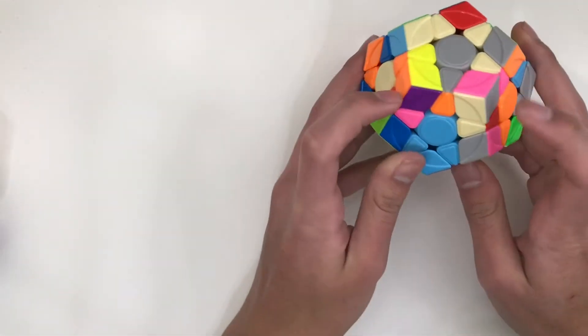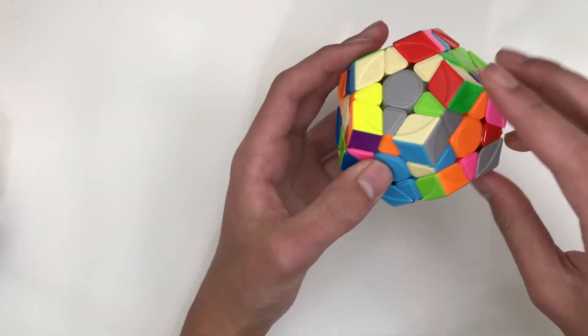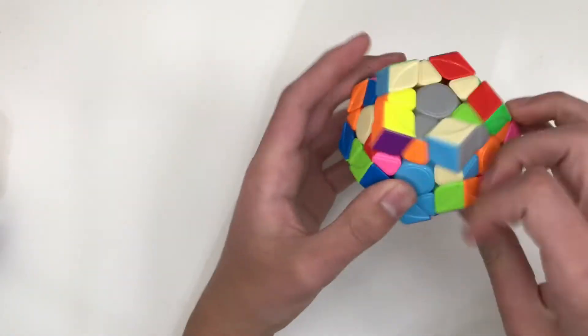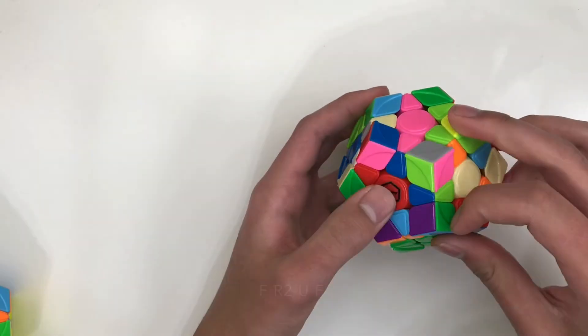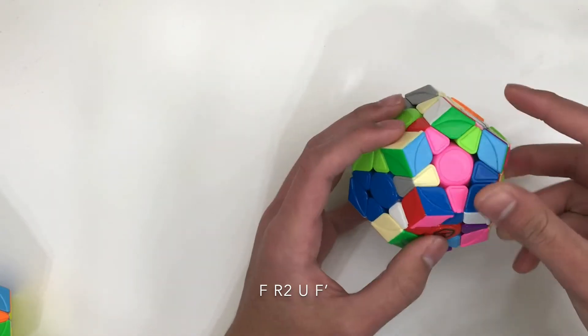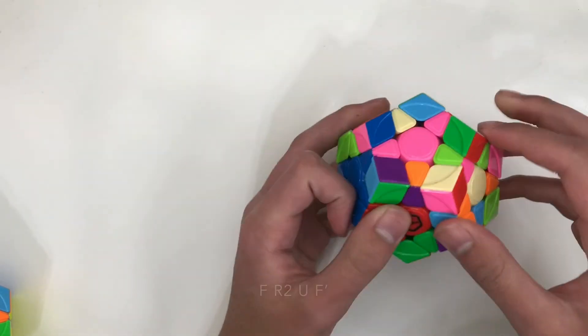So for S2L, if you wanted to insert this purple into here, bring the slot up, U2', R2'. If you're inserting this pair into here, you can bring up the slot with F, and then R2, U, F', four moves.